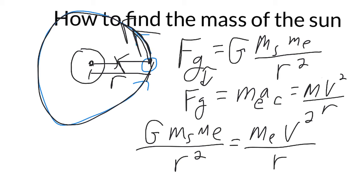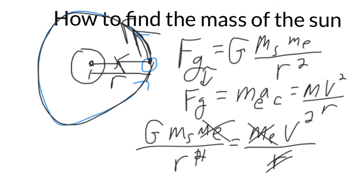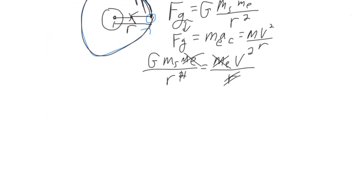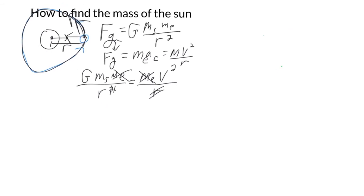That's kind of the basic equation. We can simplify this a little bit: R cancels, the mass of Earth cancels, and that leaves us with the mass of Sun is equal to the velocity of the Earth squared times the distance between them divided by big G.